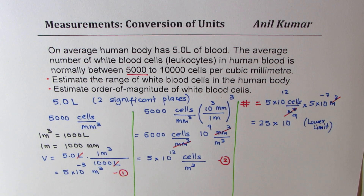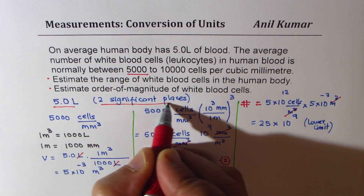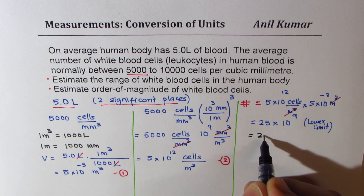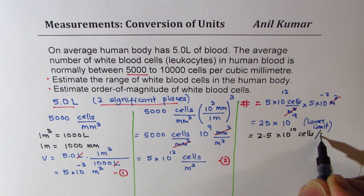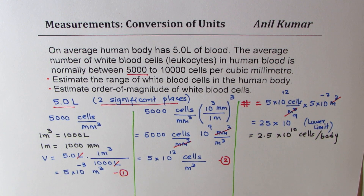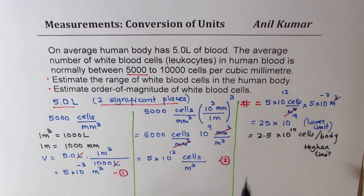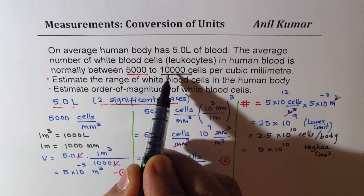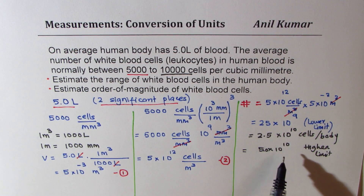The higher limit is twice the lower, since 10,000 is 2 times 5,000. So 2 × 2.5 × 10¹⁰ = 5.0 × 10¹⁰, written to two significant figures. The range of white blood cells in the human body is therefore between 2.5 × 10¹⁰ and 5.0 × 10¹⁰ cells. That completes Part A.